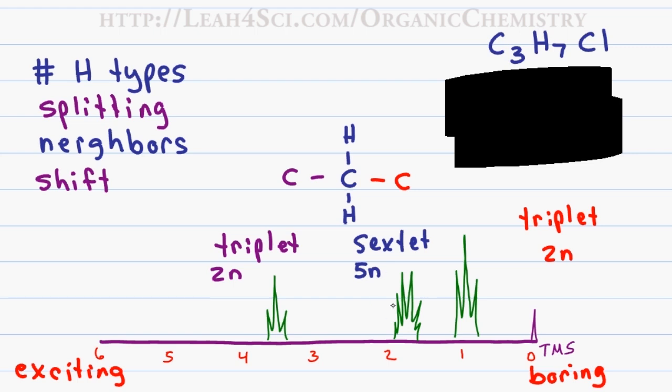The middle carbon has a total of five hydrogen neighbors. Given that I have five hydrogens left, I know that I have two hydrogens on each of the carbons both to the right and the left. That means that I have my final hydrogen on one terminal carbon and the chlorine atom on the other terminal carbon.